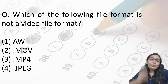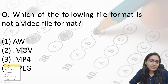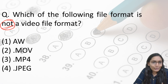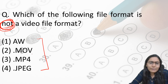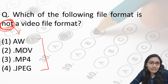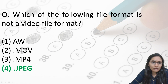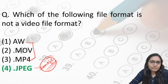Which of the following file formats is NOT a video file format? The keyword here is 'not.' The options are AVI, MOV, MP4, and JPG. Using the elimination technique: AVI, MOV, and MP4 are all video formats. JPG is an image format, not a video file format. So the answer is JPG. This is a clear application of the elimination technique.